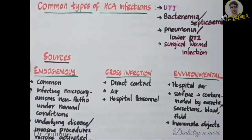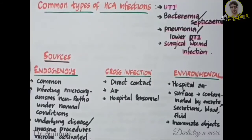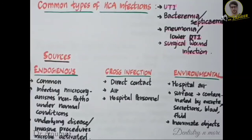Next is pneumonia or lower respiratory tract infection. The risk will be more for patients with impaired pulmonary clearance mechanisms, patients with underlying pulmonary diseases, or patients under ventilator assistance. The microorganisms causing this infection are Klebsiella pneumoniae, Pseudomonas aeruginosa, and Staphylococcus aureus, etc.